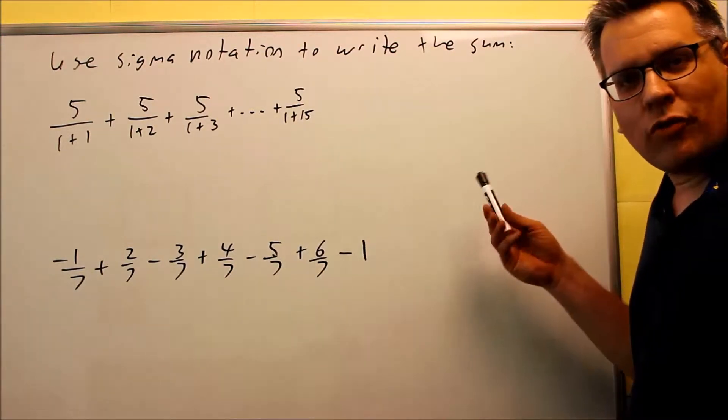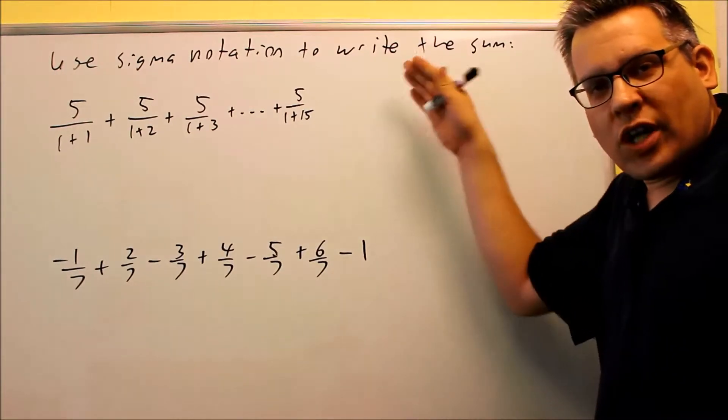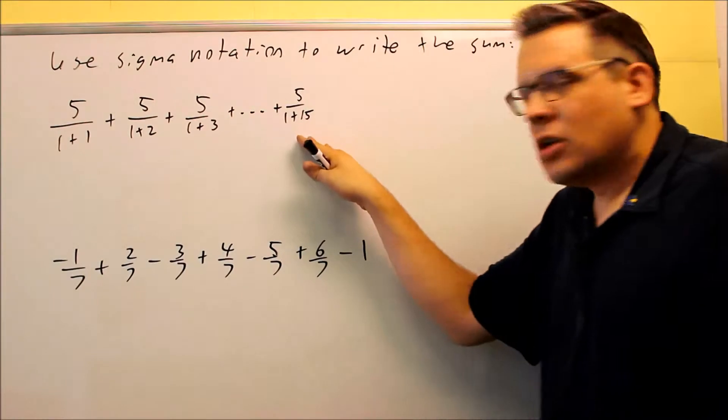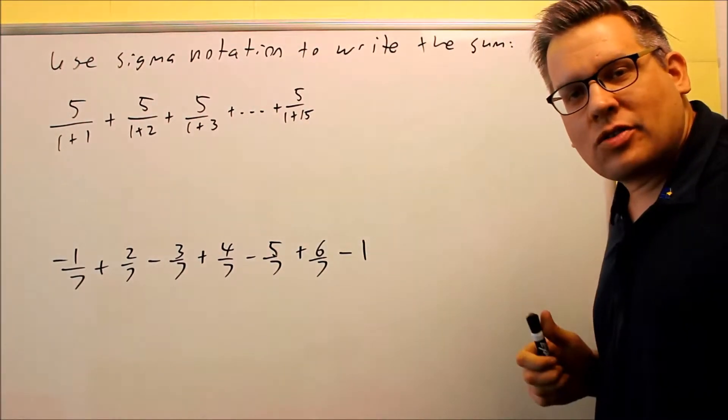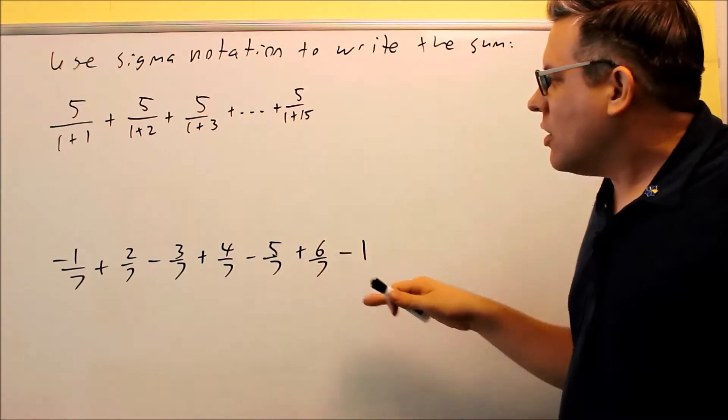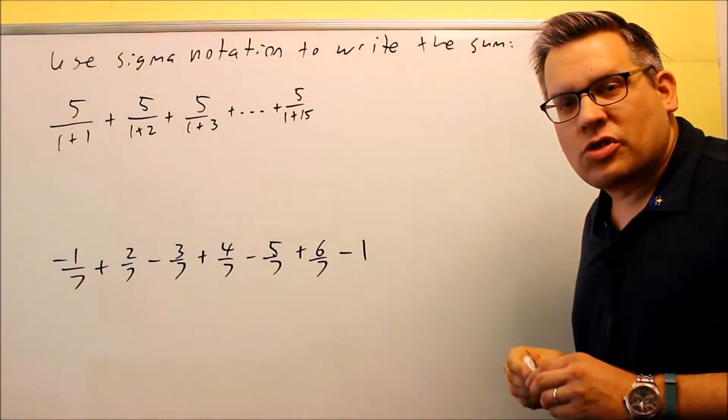Okay, for these problems, we're doing the reverse that we just did before. On the previous problem, we were given the formula and we calculated the sum. Now this time, they're giving us the sum. We want to go back and write it in sigma notation. So we have to look at the pattern that's happening on each of these, and we have to come up with some kind of formula that will generate all these terms here.